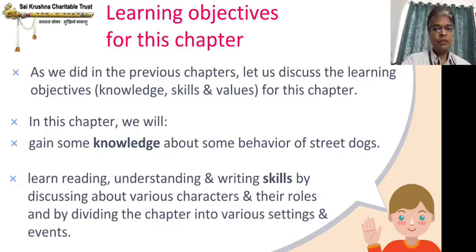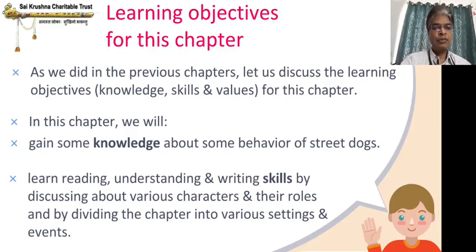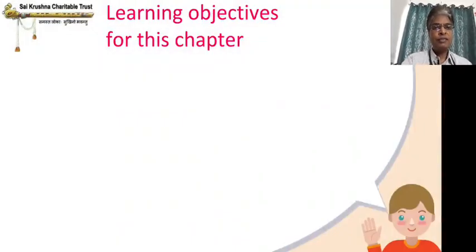Not only are we reading and understanding, we are also dividing the chapter into various events — beginning event, middle event, end event — and we look at the settings and the characters and each character's role. As we normally do, first we will complete the reading of the chapter, I will explain the meanings, and then we will do story discussions. When we do the story discussions, we will check knowledge, skills, and values.